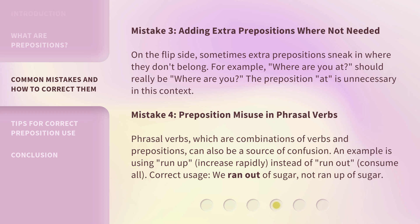Mistake 4: Preposition misuse in phrasal verbs. Phrasal verbs, which are combinations of verbs and prepositions, can also be a source of confusion. An example is using 'run up' (increase rapidly) instead of 'run out' (consume all). Correct usage: We ran out of sugar, not ran up of sugar.